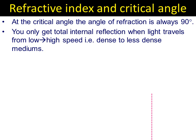We only get this when we're moving from a low to high speed medium, so when the speed of light is getting faster, so it's going from glass into air, water into air. It can't happen when you go from air into water, because what happens then is the light will always bend towards the normal, which means the angle of refraction will get less.